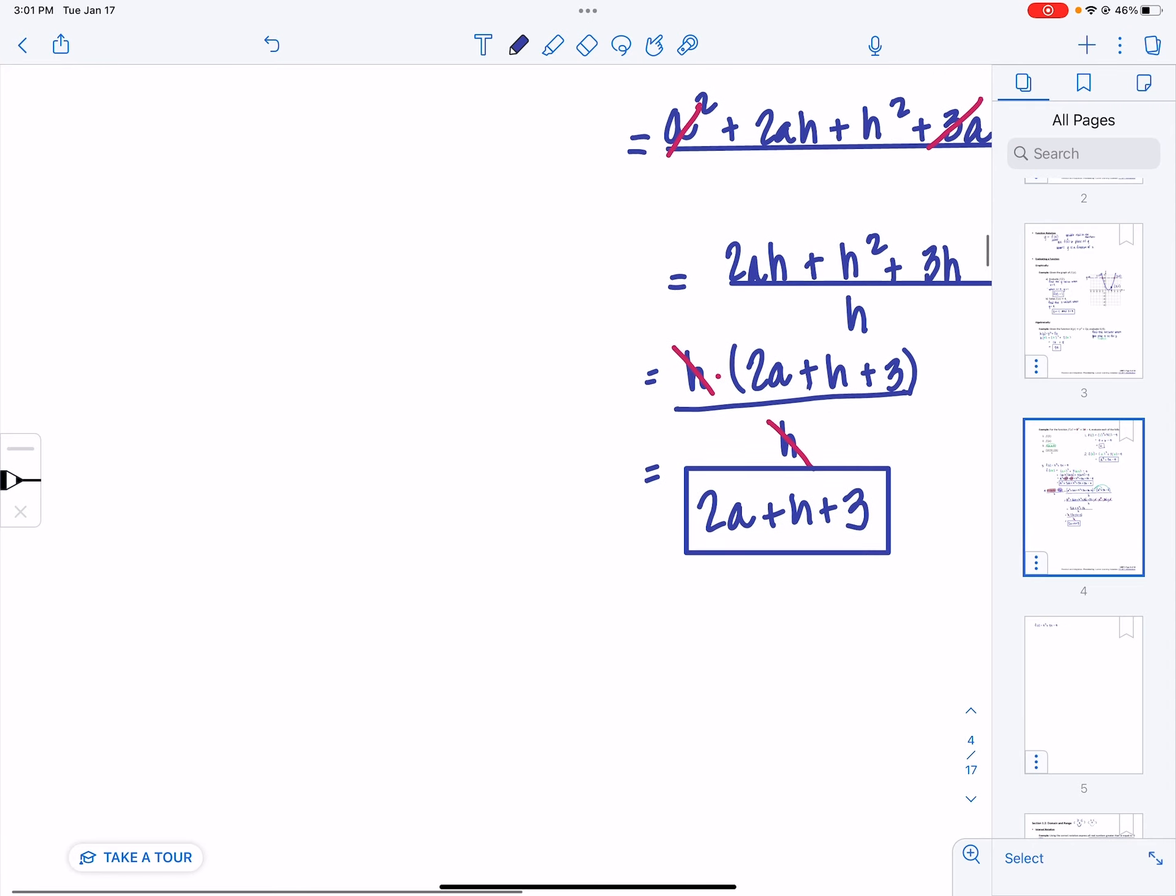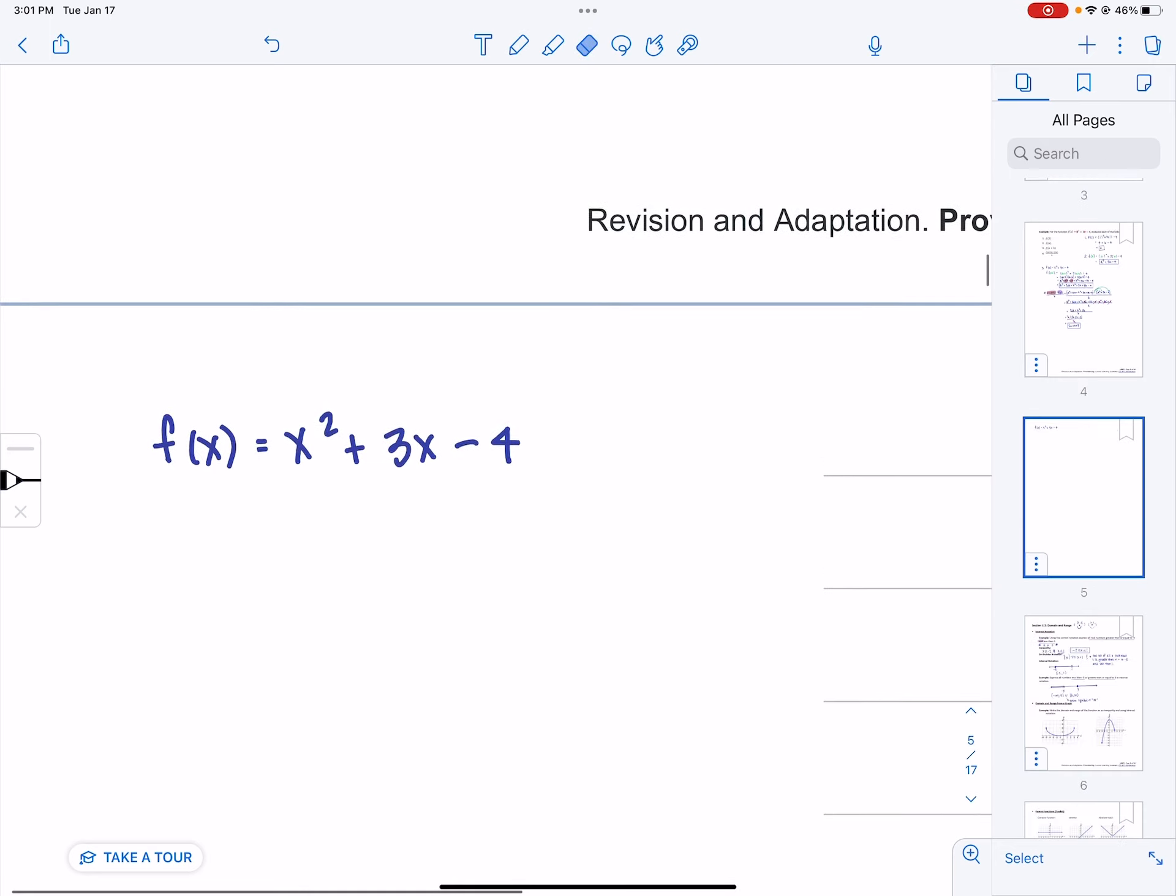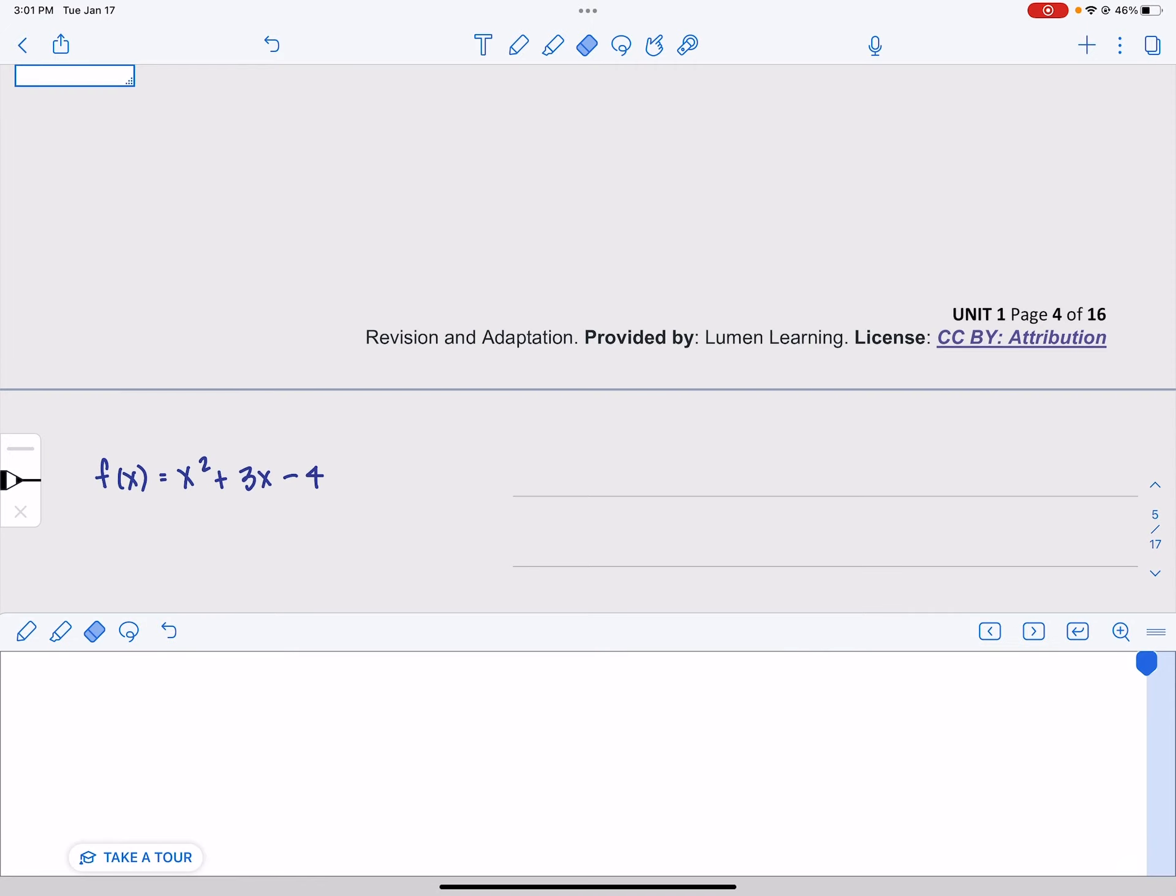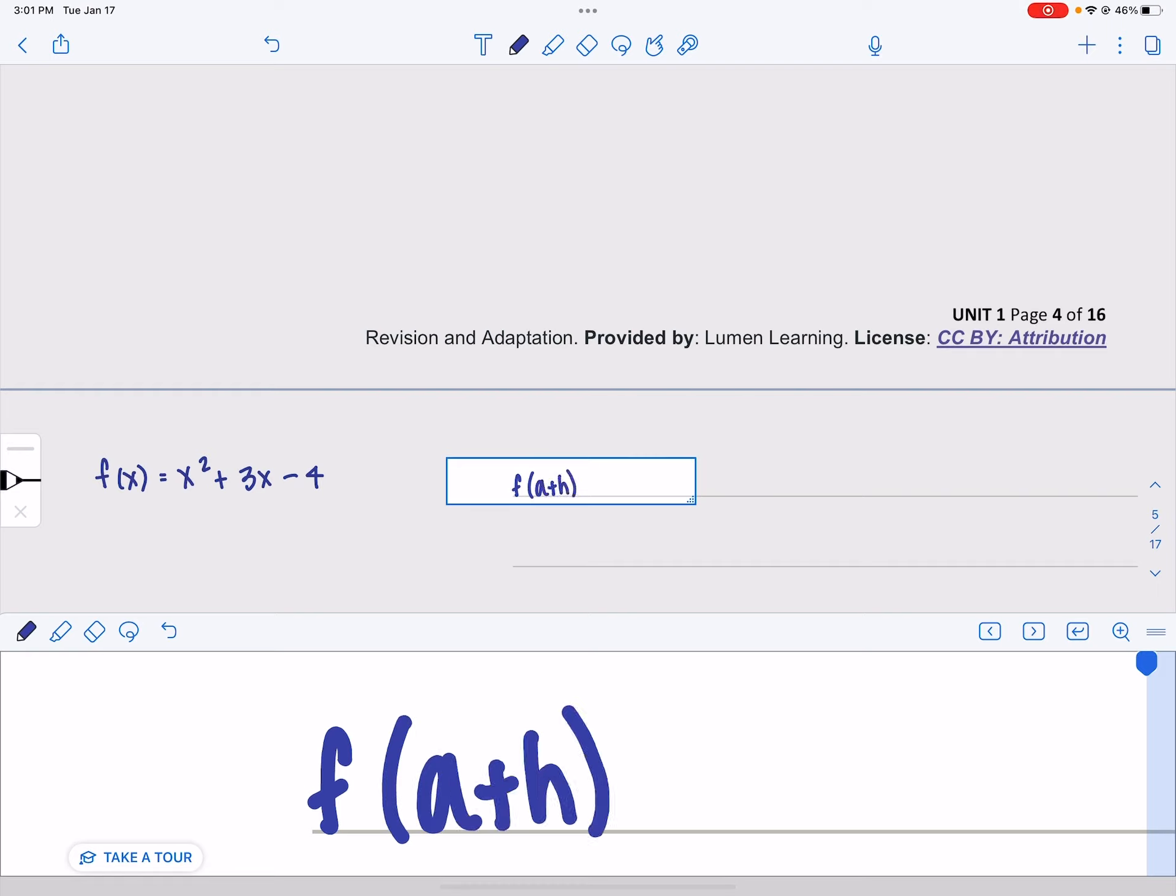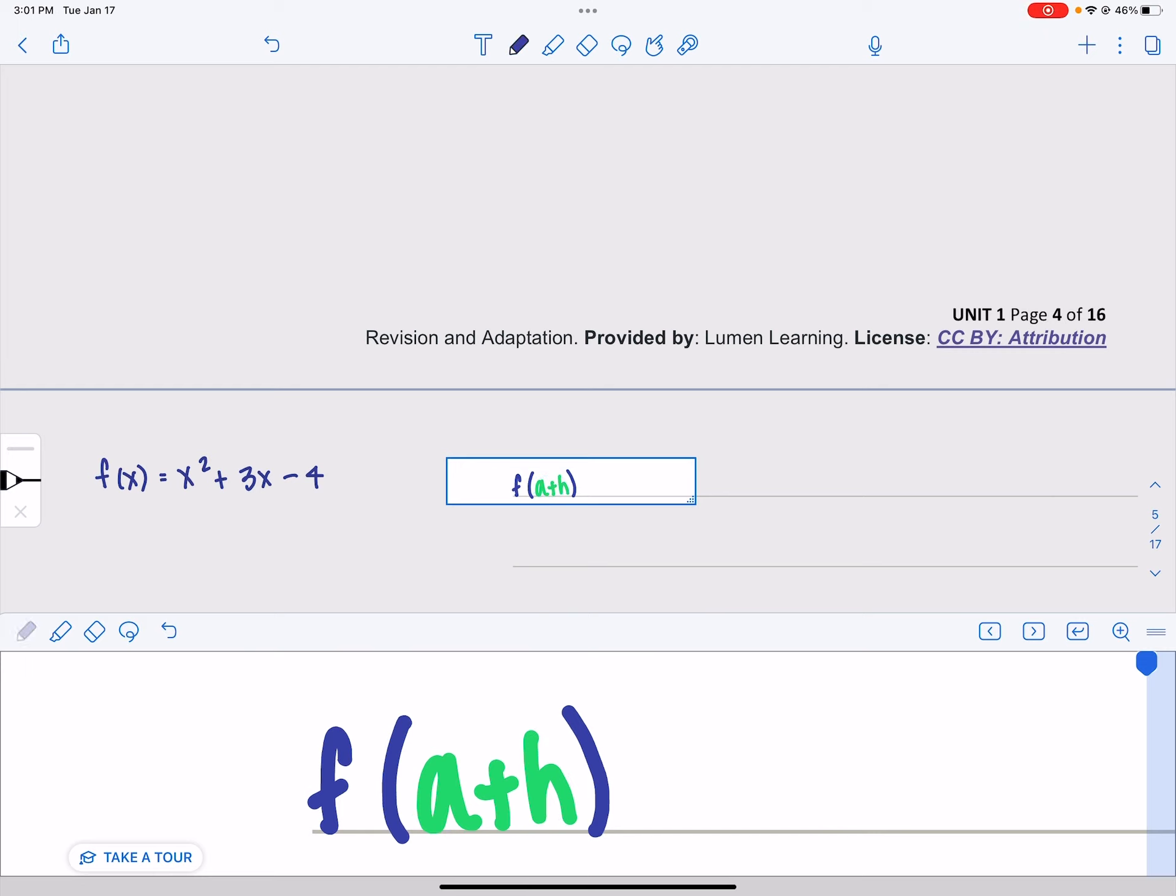So this is from example three where we were evaluating f of a plus h. I have my function written and we want f at a plus h. I'm going to change this color because I think it really helps to have that visual of the color difference.